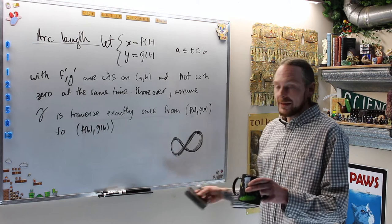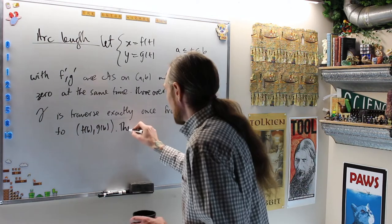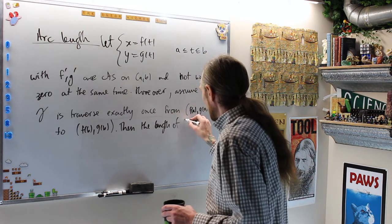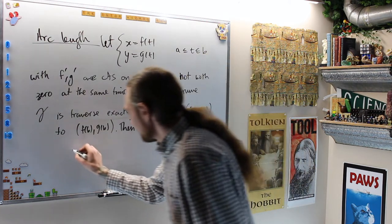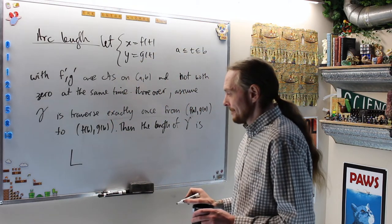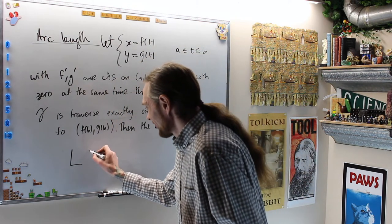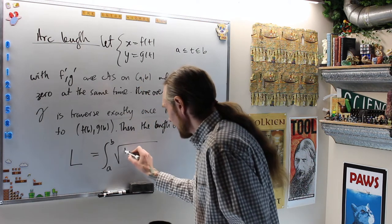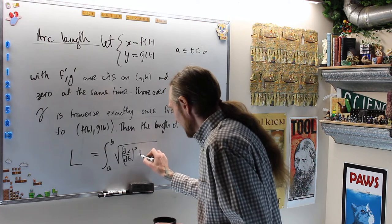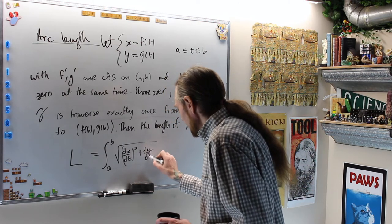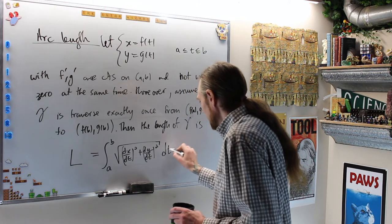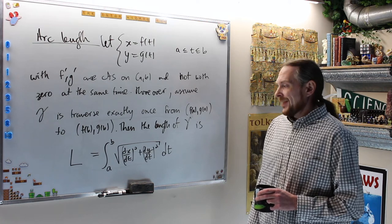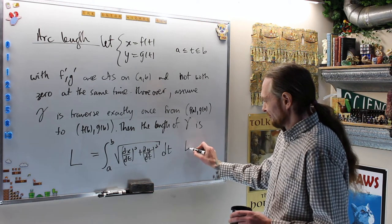Then, and we won't derive this, but then we have a formula for arc length. Then the length of gamma is L equals the integral from a to b of the square root of (dx/dt)² plus (dy/dt)² dt. This is the arc length of the parameterization.